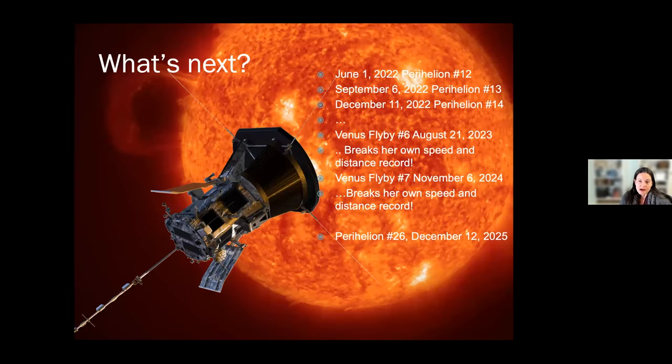So looking at what's next, coming up in June, so a few months from now, we'll go into perihelion 12. So each time we come close to the sun, it's a perihelion. We have 26 total, we're at number 12 in June. And then in September, same distance, we'll do it again, December, and on and on until August of 2023, where we'll do another Venus flyby. And every time we do a Venus flyby, Parker breaks her own record, speed and distance record, as the fastest human-made object, as well as the closest to the sun. So there'll be another step closer to the sun. There'll be a few orbits. Then November 2024, it'll be the final Venus flyby. And again, breaking her own speed and distance record, going as close to the sun as the mission can do. And then on perihelion 26 in December of 2025 will be the last of the nominal part of the mission for Parker, and touching the atmosphere again, and getting a feel for what's happening there.